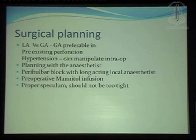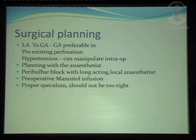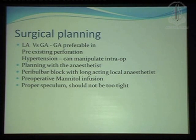Surgical planning: LA versus GA. As Dr. Fogla was discussing, GA is possibly something which can really make the surgeon's life easier. The patient might be fasting for six hours and have a tube through the throat, but the outcome you will be able to deliver with GA in such a compromised situation is much higher than with local anesthesia. In cases of pre-existing perforation, hypertensive patients, or glaucoma, there is nothing like a good GA to make the surgery much, much safer. If you are still going to do it under LA, please don't leave the block entirely to the anesthetist — check it yourself, inject adequate long-acting anesthetics and make proper akinesia and anesthesia, because the surgery is going to last quite some time.